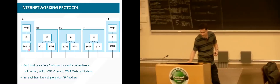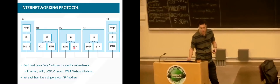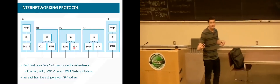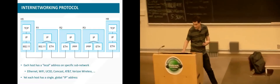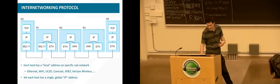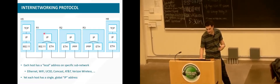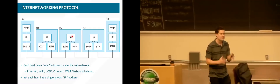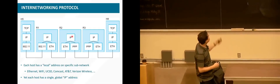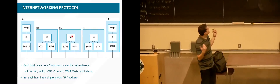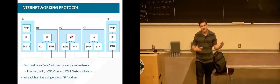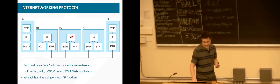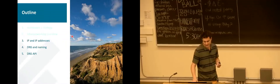As data flows through the system, we're adding and removing headers unique to those particular networks until it gets to the destination. The thing that makes all this work is that there's a single layer that every network technology and every end host has to implement — IP. That's the commonality that allows all these networks to work together. The evolution of that process is incredibly fascinating, but obviously beyond the scope of this class.